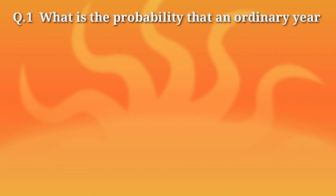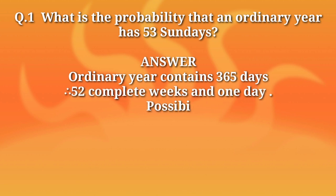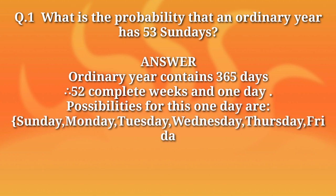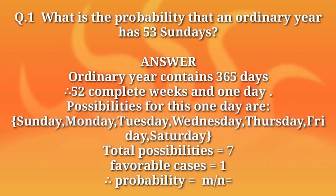Let us practice: What is the probability that an ordinary year has 53 Sundays? In an ordinary year there are 365 days = 52 complete weeks + 1 extra day. This one extra day can be Sunday, Monday, Tuesday, Wednesday, Thursday, Friday, or Saturday — 7 possibilities. The favorable event (Sunday) is 1. So probability = 1/7.